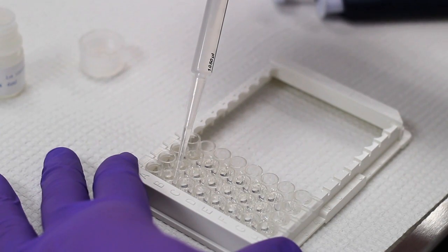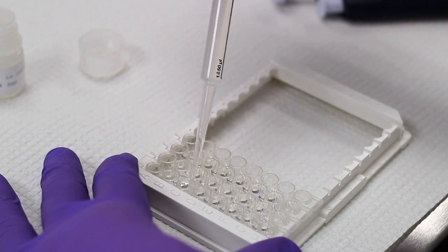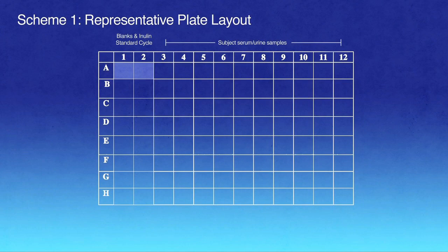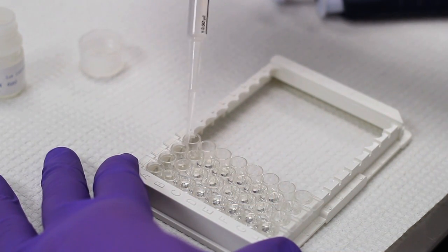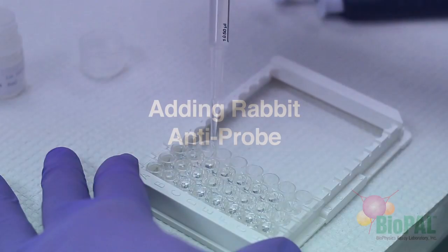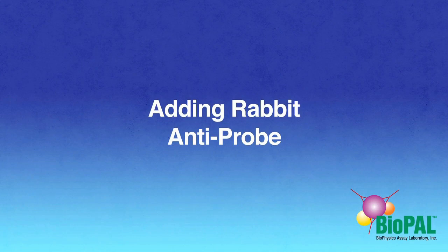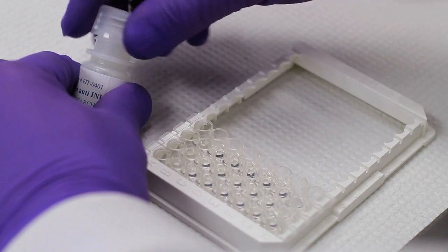After placing the blanks, begin pipetting the standards starting with test tube B. When you have completed plating out all the standards, the first two columns of the plate will be filled. Now begin plating out your samples in duplicate as outlined on your schematic.